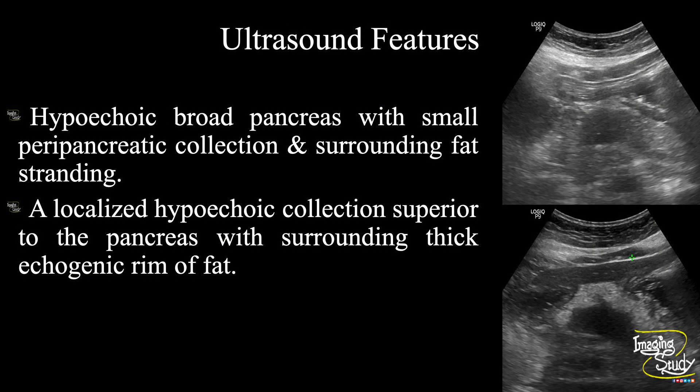In summary, a hyperechoic broad pancreas with a small peripancreatic collection and surrounding fat stranding is noted, suggesting acute pancreatitis. A localized irregular hyperechoic collection superior to the pancreas is seen with a surrounding thick echogenic rim of fat.